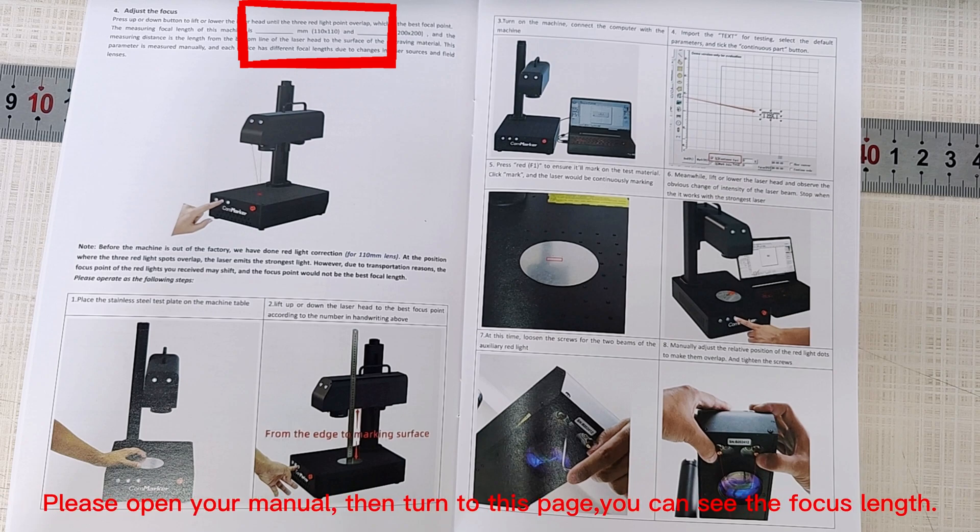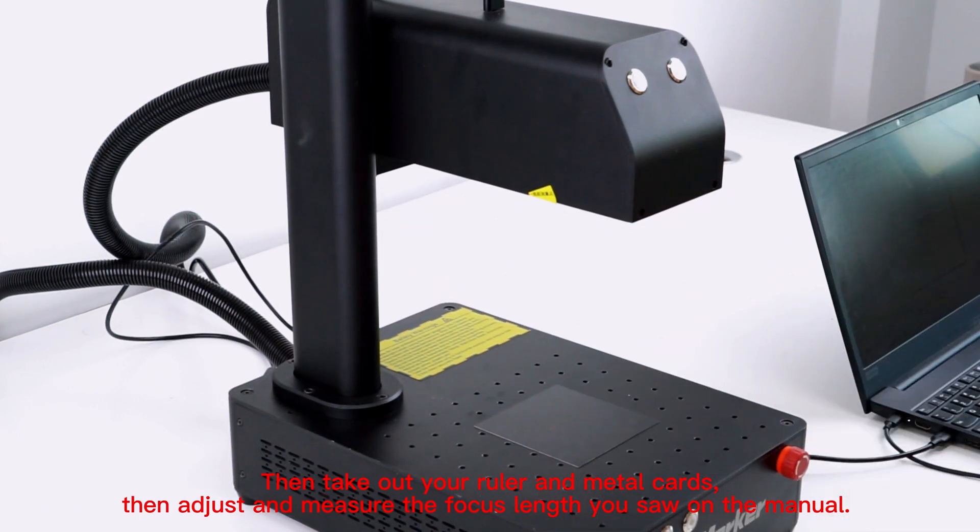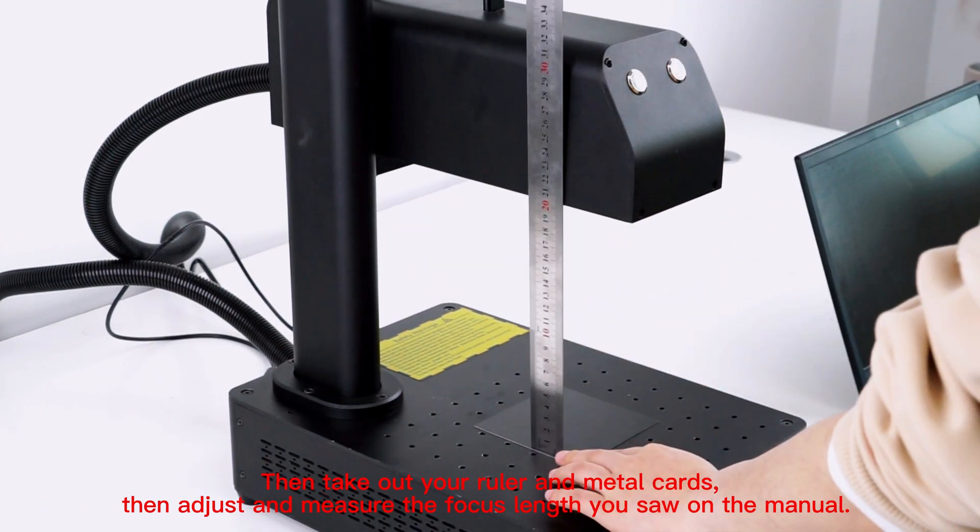Open your manual and turn to the page showing the focus length. Take out your ruler and metal cards, then measure the focus length as indicated in the manual.